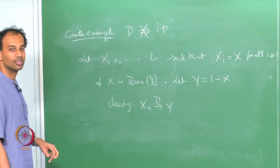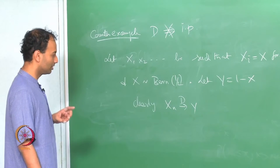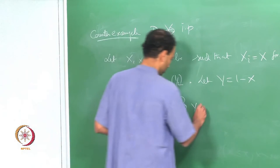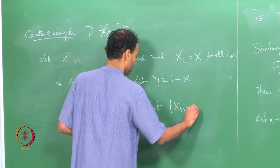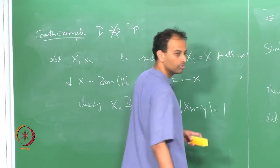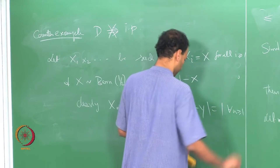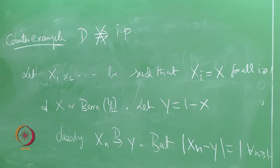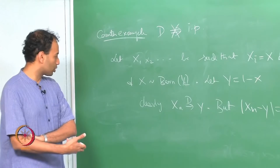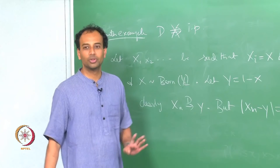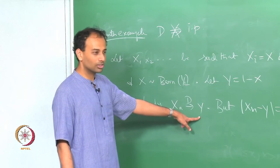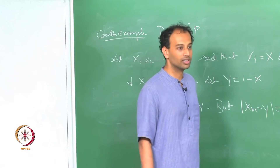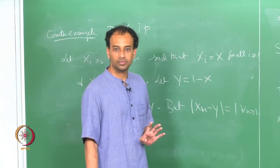But X_n does not converge to Y in probability, because |X_n − Y| = 1 always. So this is a pathological but valid counter-example: X_n converges to Y in distribution but X_n − Y is always equal to 1 — it will never become smaller than any epsilon.